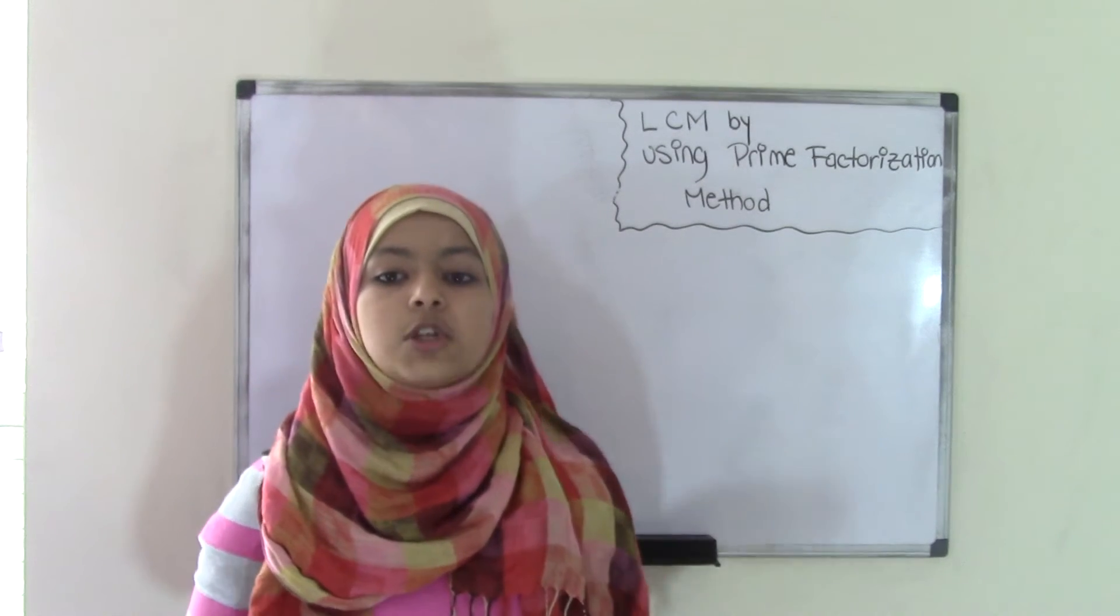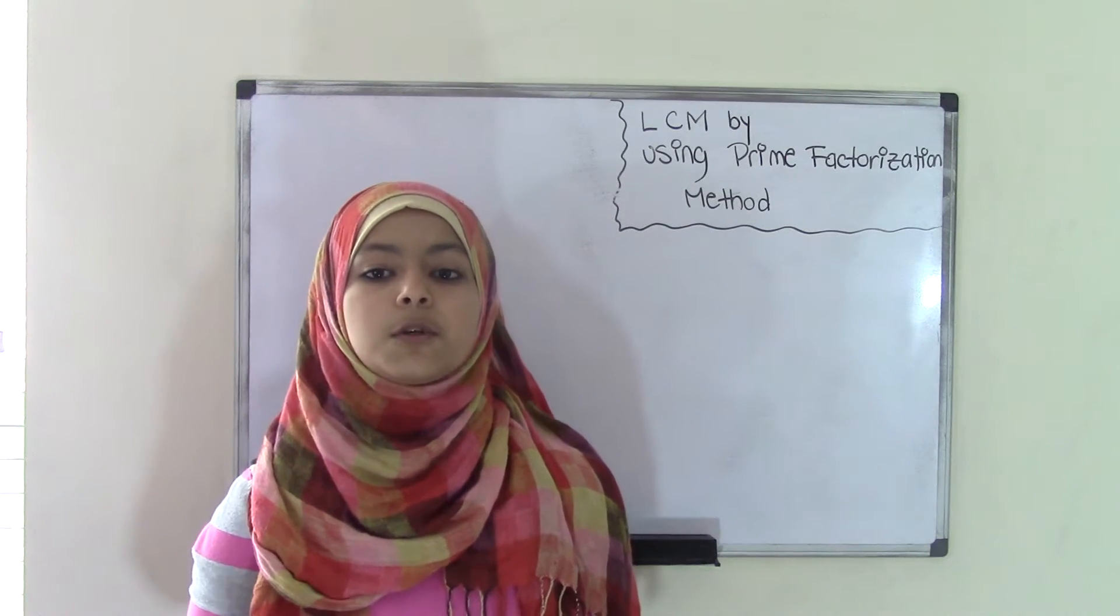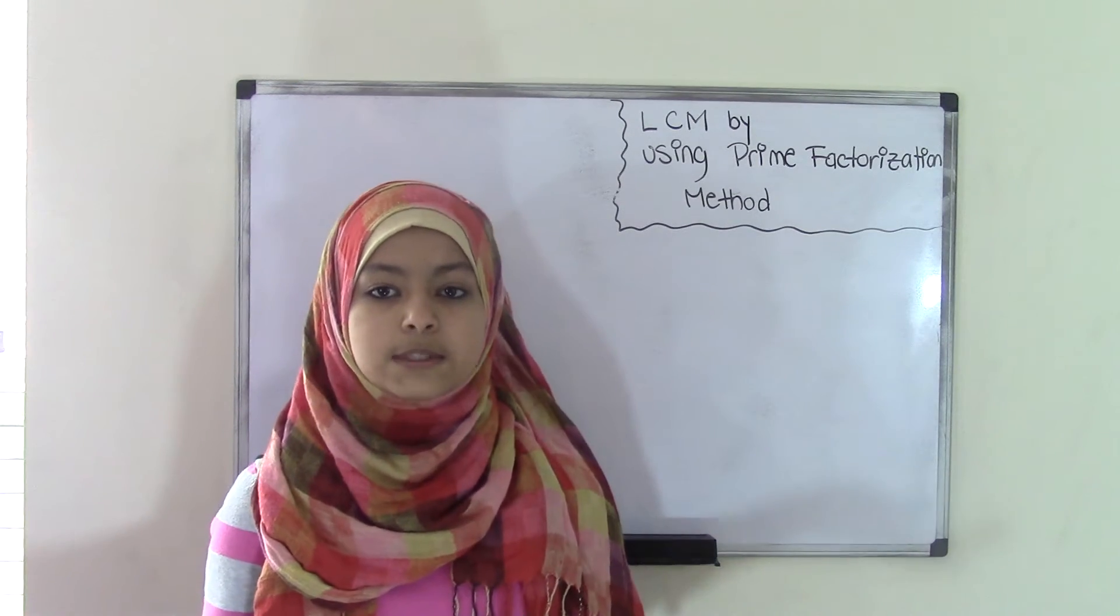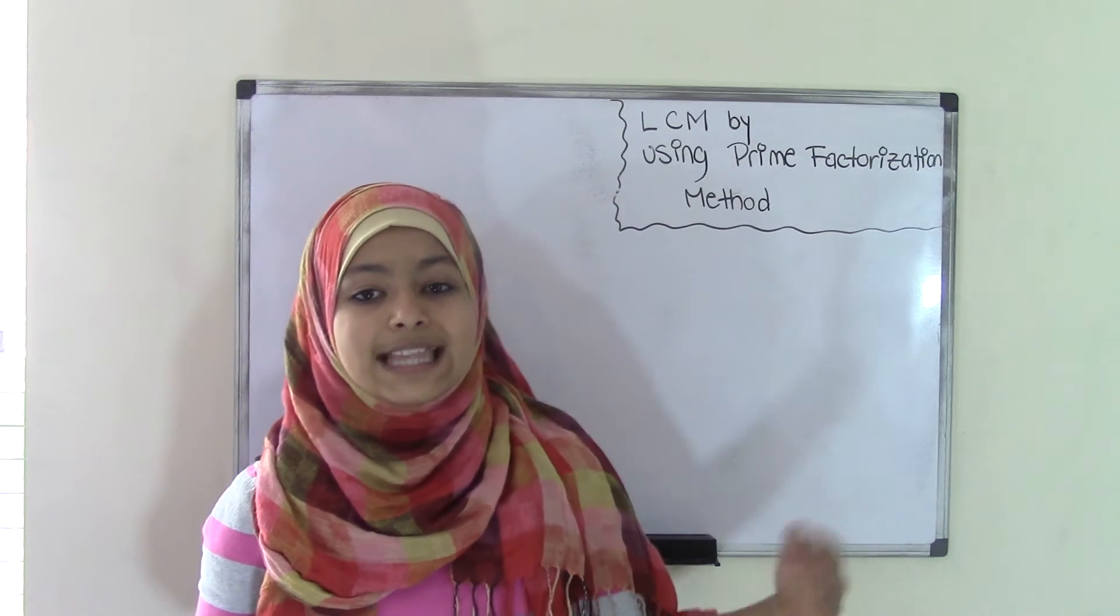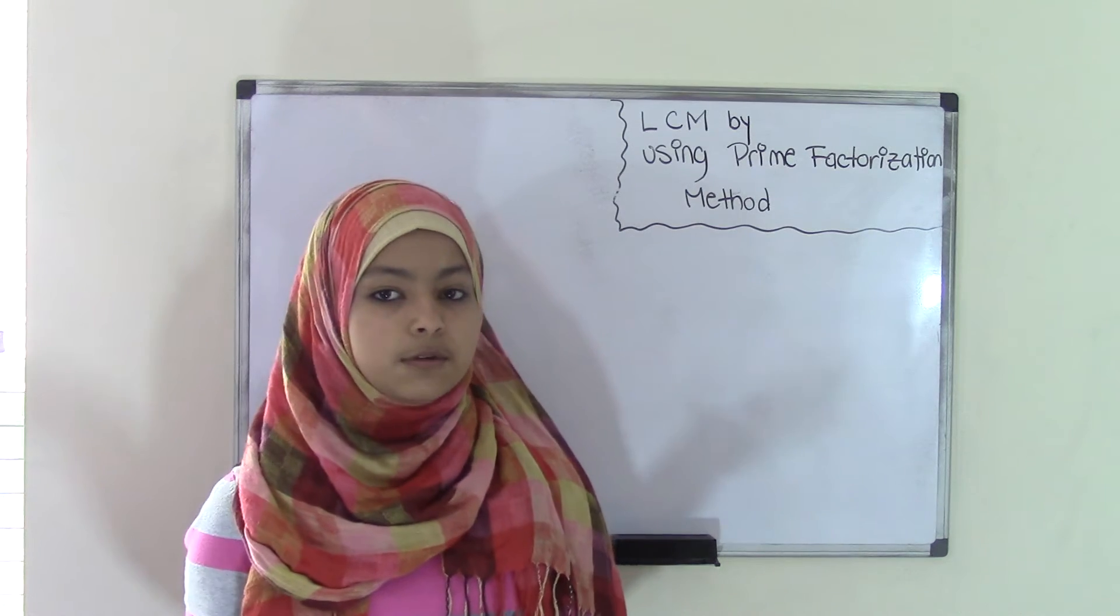Keep in mind that the LCM is just the least common multiple. Usually when you're finding the least common multiple, you first list all multiples, find the common multiples, and then find the smallest multiple to find the LCM or the least common multiple.